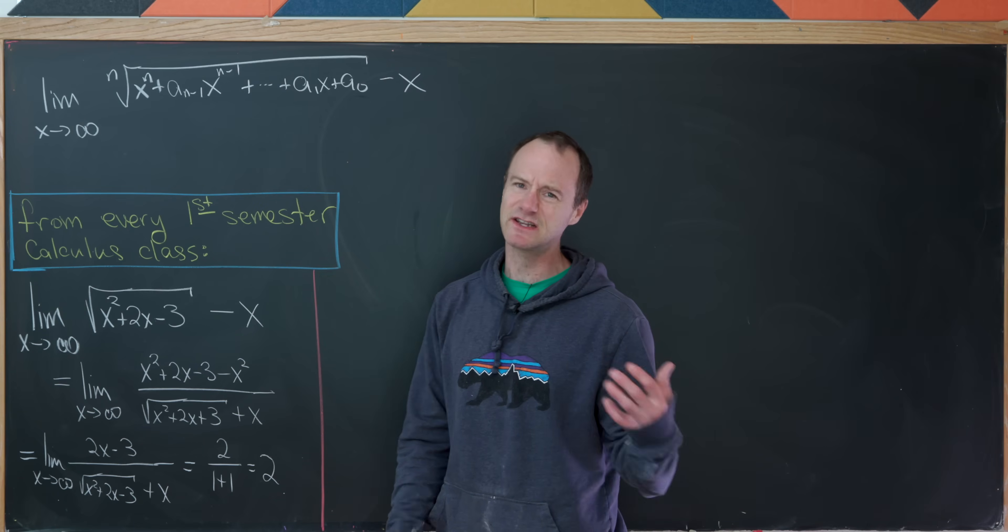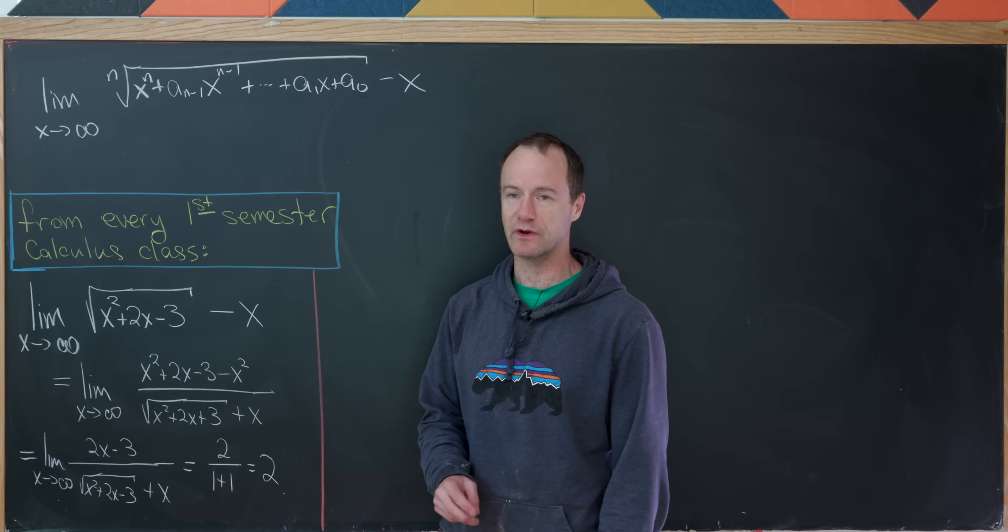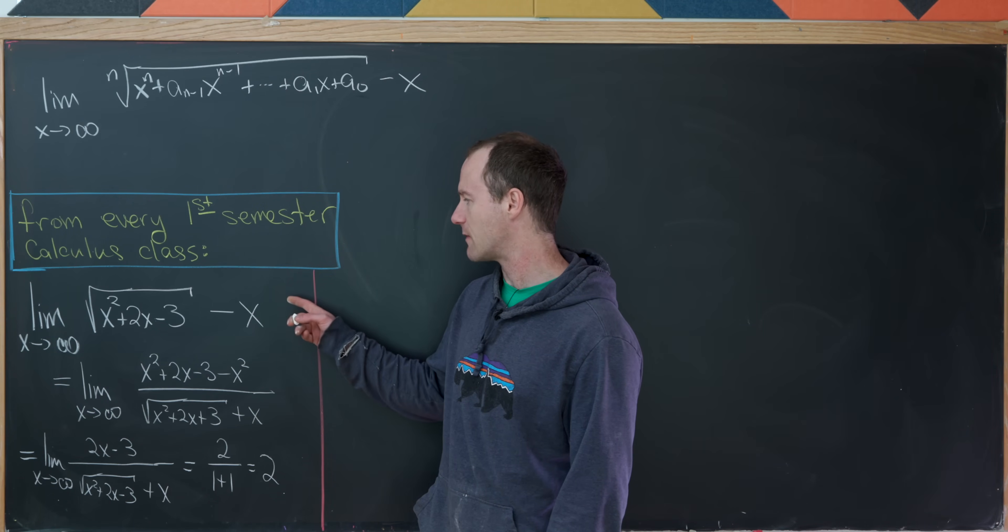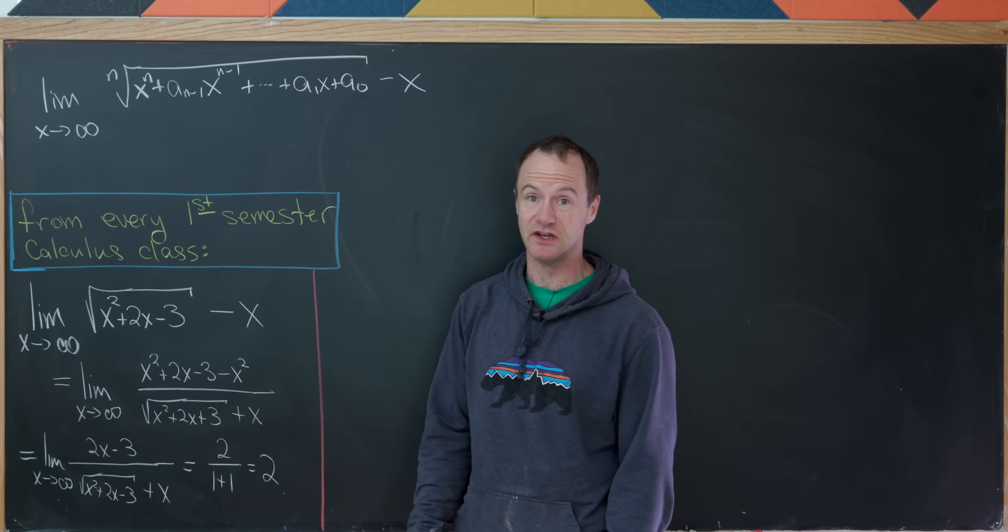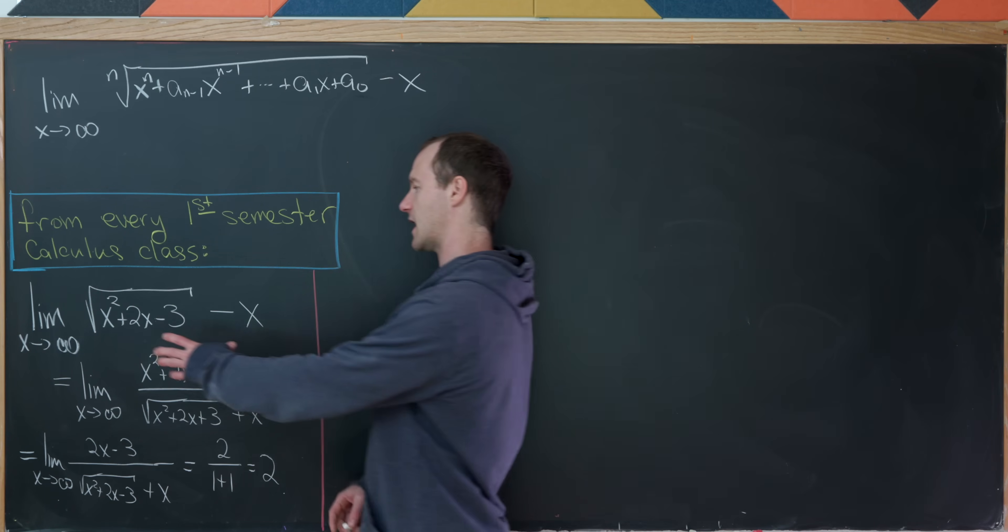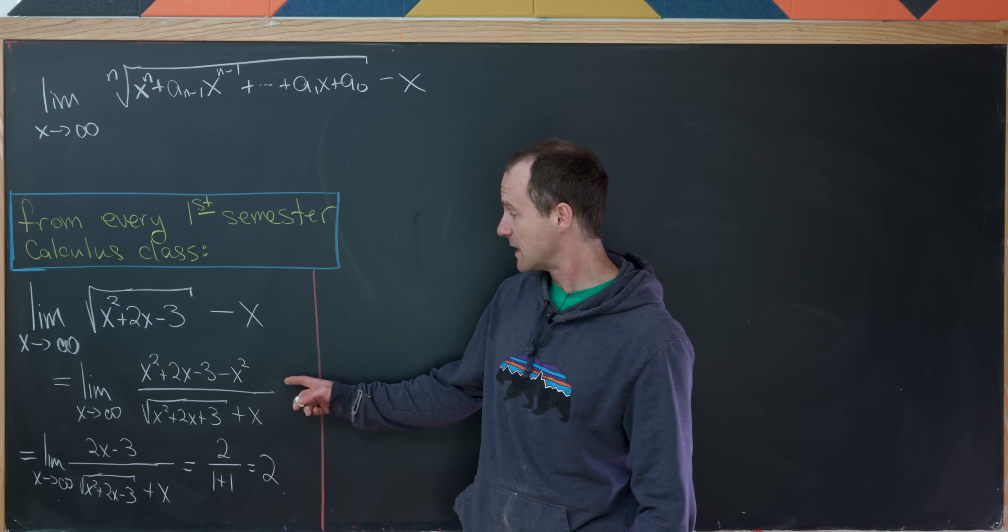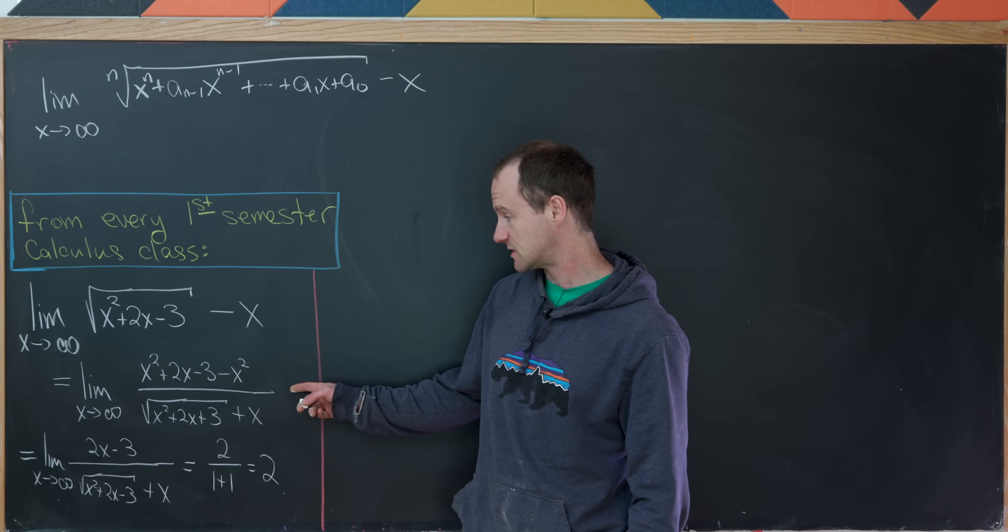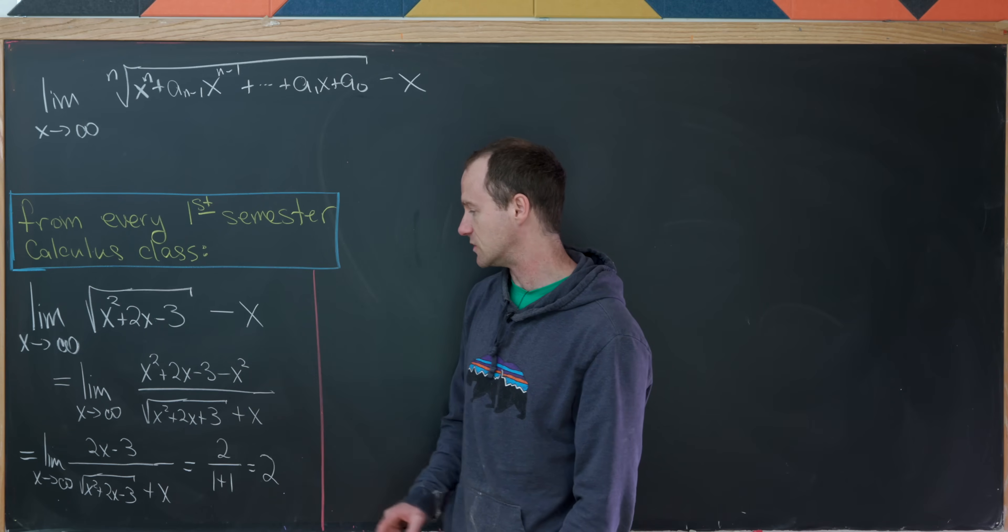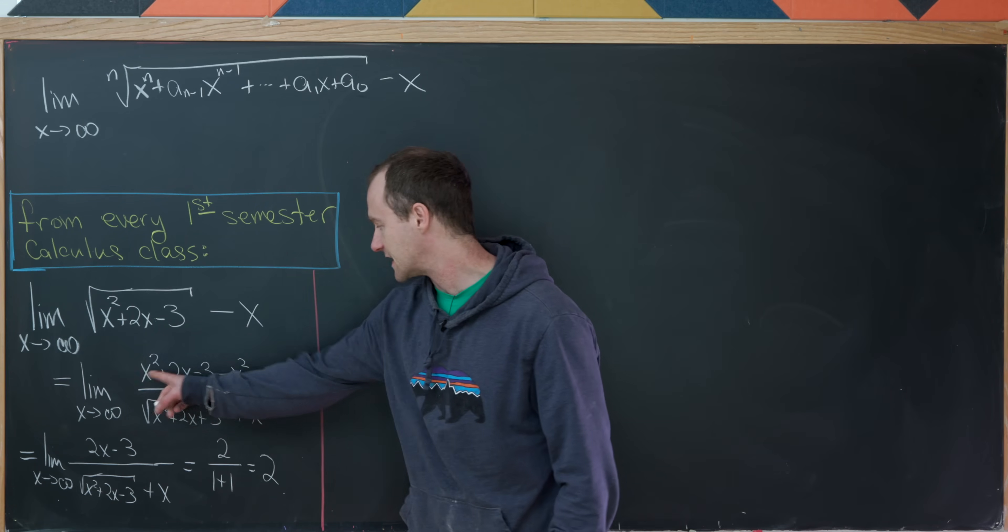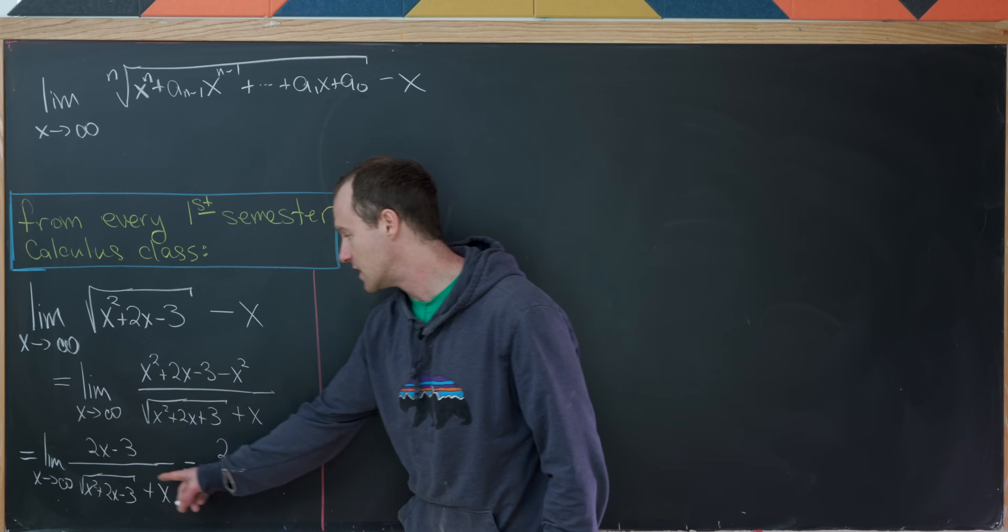So I'd like to go through really quickly how we would evaluate this limit. I'd probably rationalize the numerator by multiplying by the square root of this stuff plus x over itself. That'll give me something like this. Notice the square root disappears in the numerator, then I can cancel the x squareds, giving me the limit as x goes to infinity of 2x minus 3 over that square root of stuff plus x.